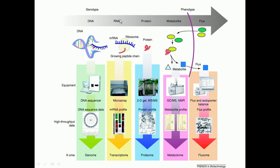Those RNAs are then translated into proteins. All the proteins present inside the cell at a particular time or in a particular system are called the proteome, and the discipline of biology in which we understand the structure and function of all those proteins is called proteomics. After that, moving from proteins to the metabolite level — protein-protein interactions and all the chemical reactions going on inside our body, like glycolysis and the Krebs cycle — this whole metabolic system inside the cell is called the metabolome, and its study is called metabolomics.